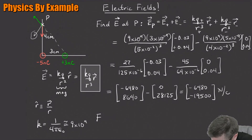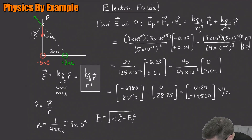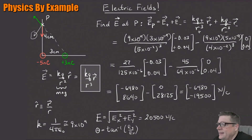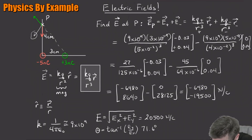If you want the magnitude and direction: the magnitude of the electric field is the square root of Ex² + Ey² (plus Ez² in 3D). Doing that gives about 20,500 newtons per coulomb. The direction is the inverse tangent of Ey over Ex, which gives the angle with respect to the x-axis — I get about 71.6°, pointing down into the third quadrant. I'd call that 71.6° south of west.